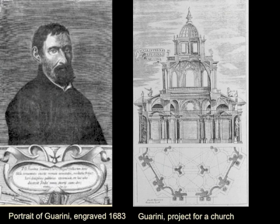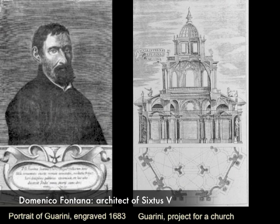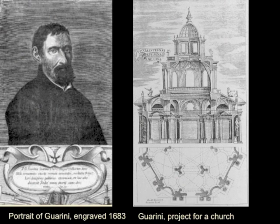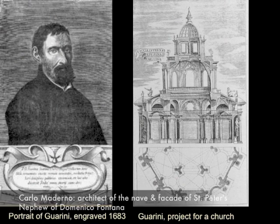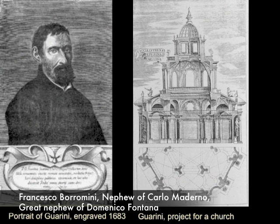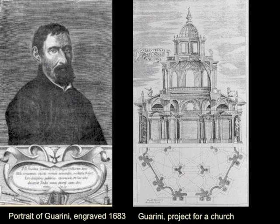Looking at Baroque Rome, we began with Domenico Fontana, great architect of Sixtus V. Then we moved to the extension of the nave and façade of St. Peter's — the architect there was Carlo Maderno, nephew of Domenico Fontana. When Maderno died, a new architect came on: Francesco Borromini, nephew of Maderno. These architecture families are fairly tight clans, and what you learn in those clans are the techniques of building, working with stone, and structural techniques.